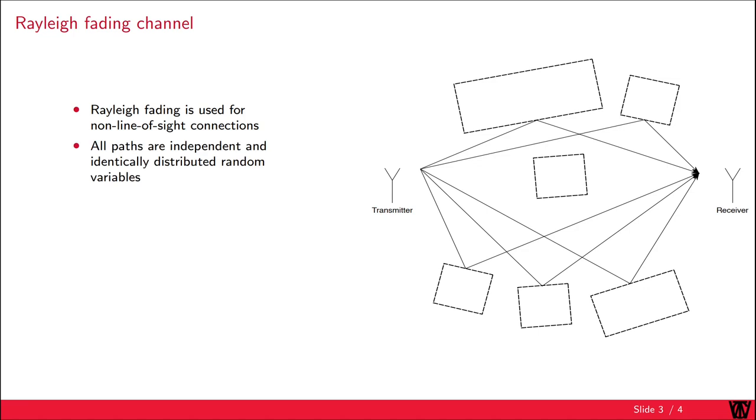Mathematically, all paths are independent and identically distributed random variables. Due to the central limit theorem, the channel gain can be approximated by a Gaussian distribution. As we are transmitting complex symbols, we also have a complex Gaussian distribution. The absolute value of the channel is Rayleigh distributed, which gives this type of fading the name Rayleigh fading.